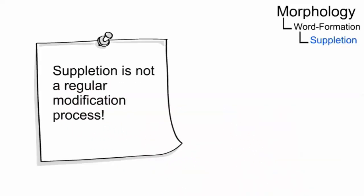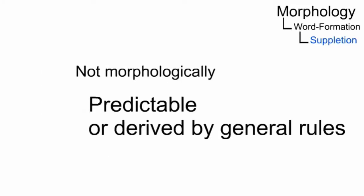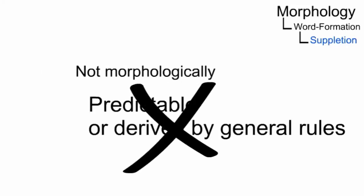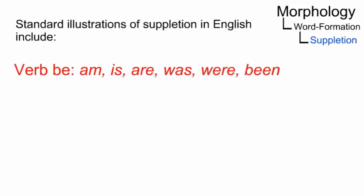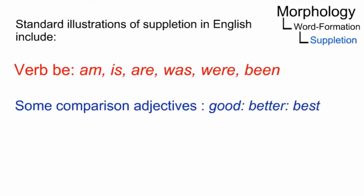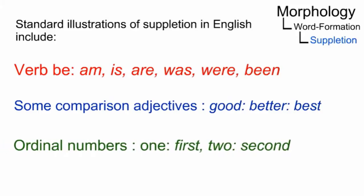Suppletion occurs when the syntax requires a form of a lexeme that is not morphologically predictable. Standard illustrations of suppletion in English include the forms of the verb be, the degrees of comparison of some adjectives, and the non-derived forms of ordinal numbers.